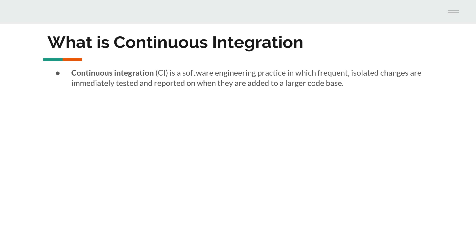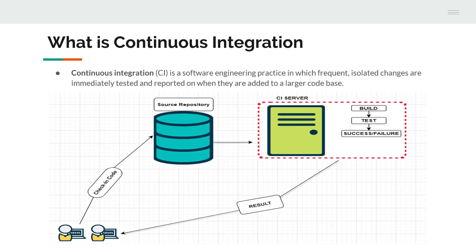This is a pictorial representation of continuous integration. Let's assume that you are a developer and you made a code change in your Java source code, and you push that particular change to the central source code repository. That source code repository might be GitHub, GitLab, or Perforce — anything.